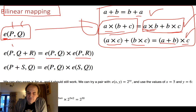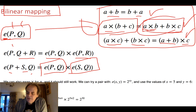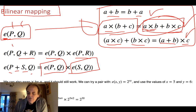Similarly, E(P+S, Q) equals E(P,Q) times E(S,Q) — the same algebraic property. We must find a function that allows us to do that, where we can swap additions with multiplications and still end up with the same operations.